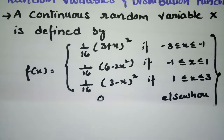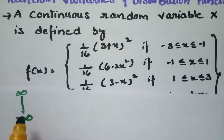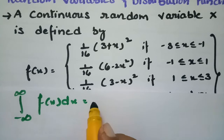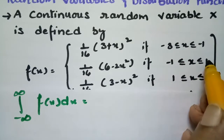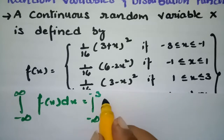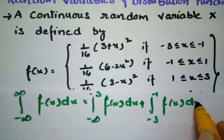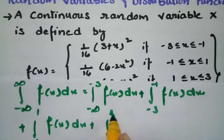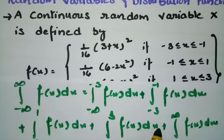To show that f(x) is a density function, we need to show that the integral from minus infinity to plus infinity of f(x) dx equals 1. Between minus infinity and plus infinity, we insert the limits -3, -1, 1, and 3, splitting the integral into: from -∞ to -3, from -3 to -1, from -1 to 1, from 1 to 3, and from 3 to +∞ of f(x) dx.